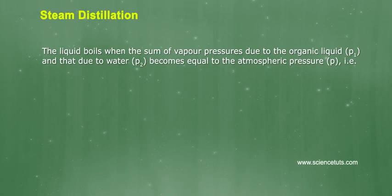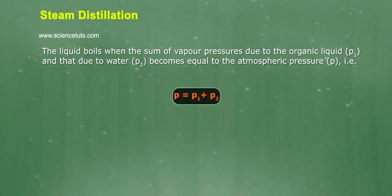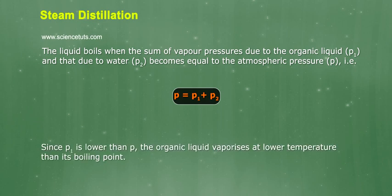The liquid boils when the sum of vapor pressures due to the organic liquid P1 and that due to water P2 becomes equal to the atmospheric pressure P. That is P equals P1 plus P2. Since P1 is lower than P, the organic liquid vaporizes at lower temperature than its boiling point.